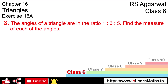Let's do question number 3 of exercise 16A. The angles of a triangle are in the ratio. We know there are 3 angles in the triangle — 1 is to 3 is to 5. Find the measure of each angle.